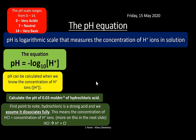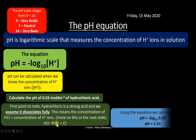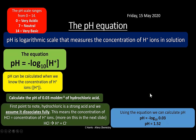Let's calculate the pH of 0.03 mol dm⁻³ of hydrochloric acid. Hydrochloric acid is a strong acid, so we assume it dissociates fully - whatever the concentration of HCl, it will produce the same concentration of H⁺ ions. So we can put the concentration of HCl directly into our pH equation: pH = -log₁₀(0.03), which gives a pH of 1.52. Check that this is sensible - it is, because it's a strong acid.